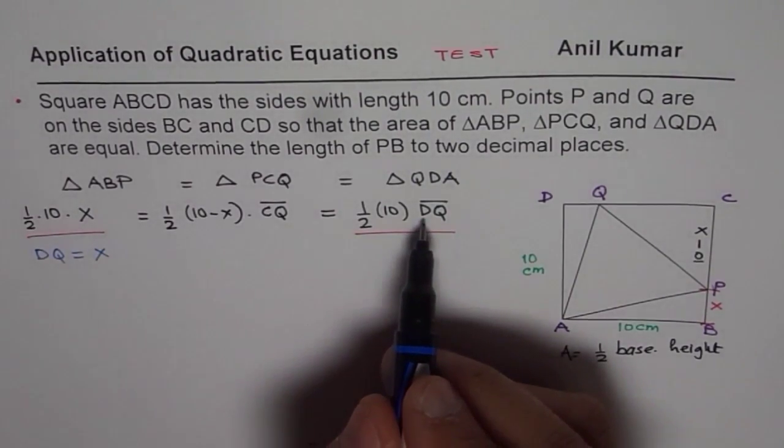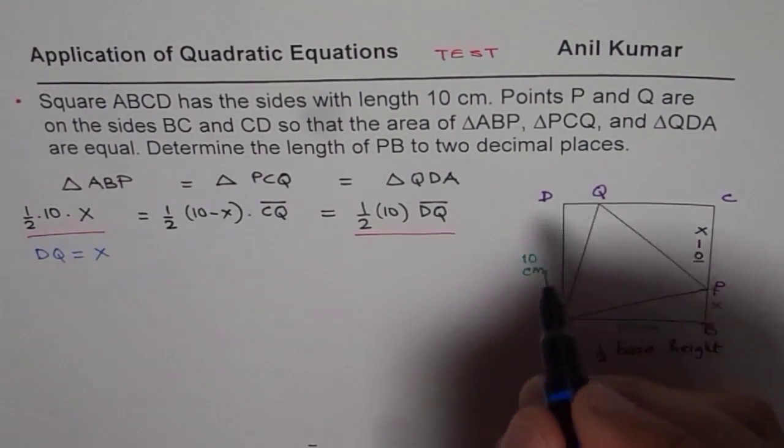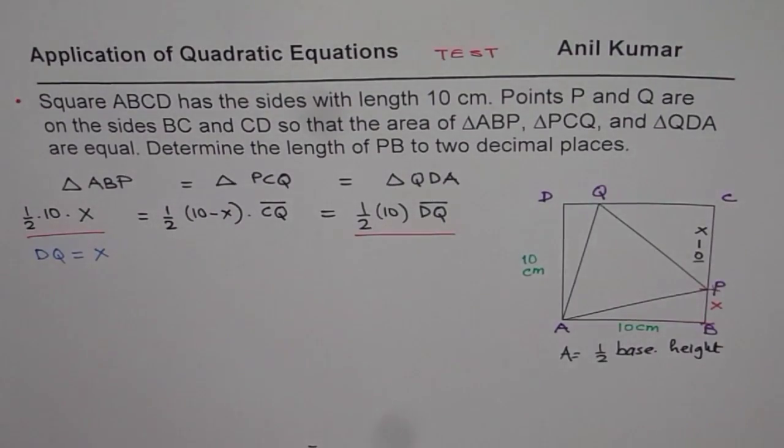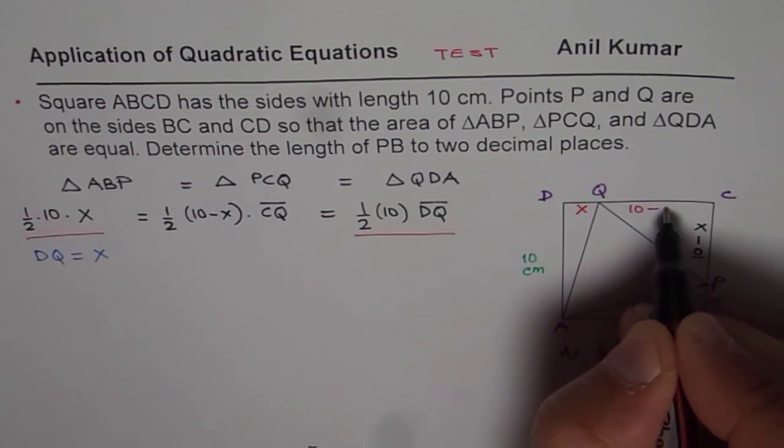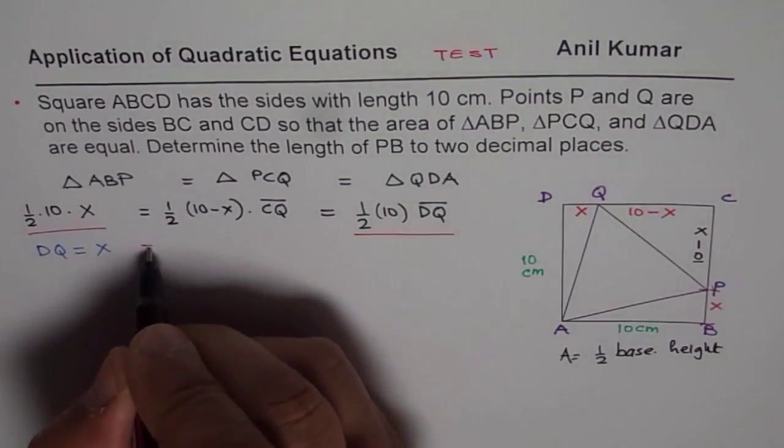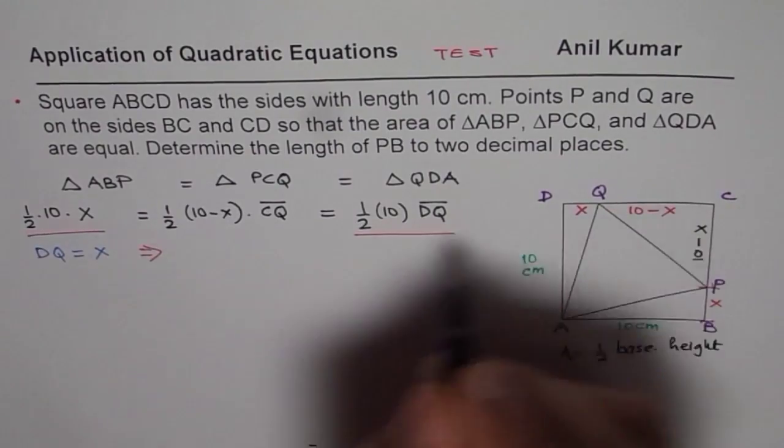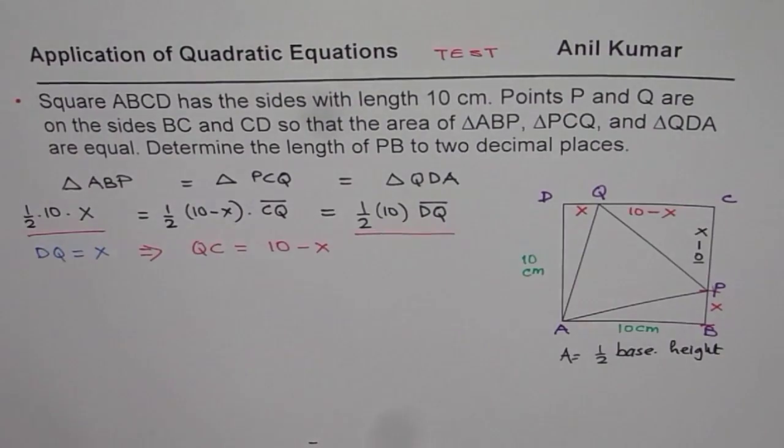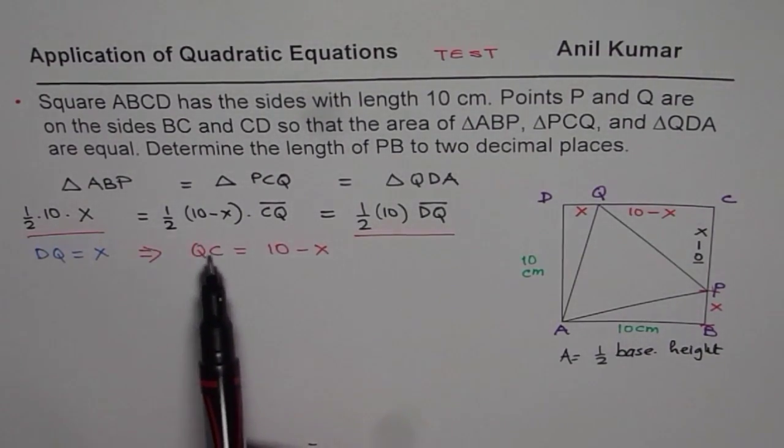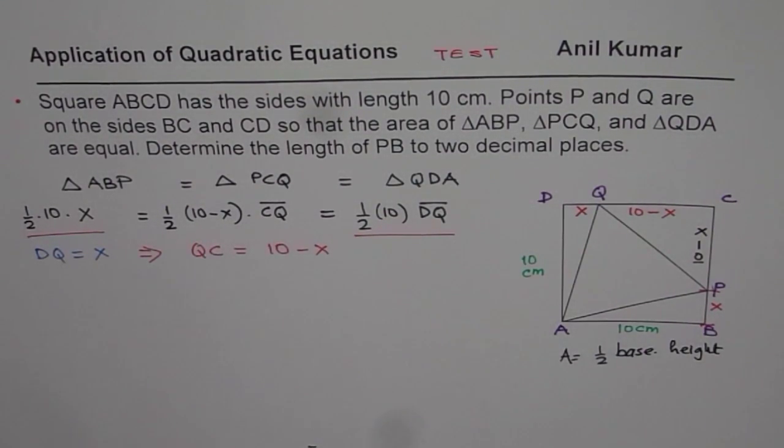Now, if DQ is X, that means DQ is X, let me write this also as X here. Then what is QC? In that case, QC should be 10 minus X. So this implies that QC should be 10 minus X. So we get DQ and QC in terms of X.